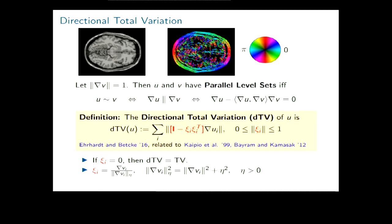Based on this, one can write down a prior that is minimal when two images have parallel level sets — that is the directional total variation, which is like standard total variation but with a small 3×3 matrix at each pixel or voxel weighting different directions. This was proposed by myself and Matthias Burger in 2016, with related ideas going back to Bayram and Kamasak in 2012 and Kaipio and co-workers in 1999. When the vector field is zero this reduces exactly to total variation; in practice we use a normalized gradient field of the MRI image.